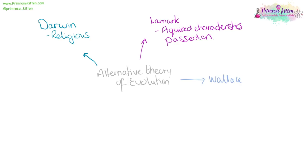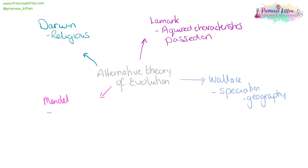Wallace worked with Darwin and they published a paper together. Wallace was very important when we were talking about speciation, which involves geography. Mendel worked with sweet peas and he discovered — or was the precursor to discovering — genes, or units of inherited information.